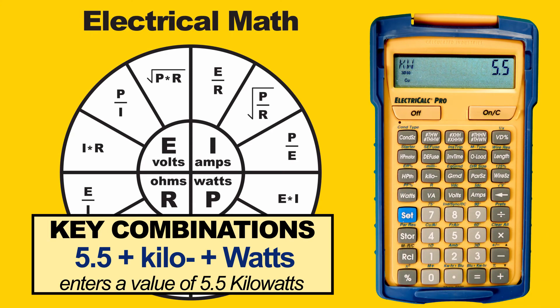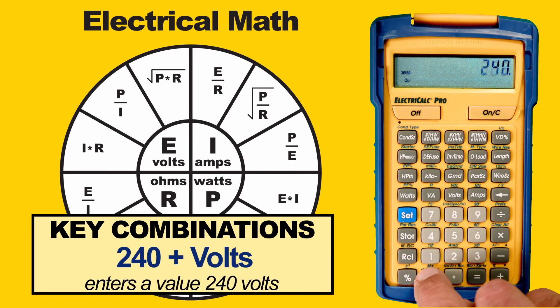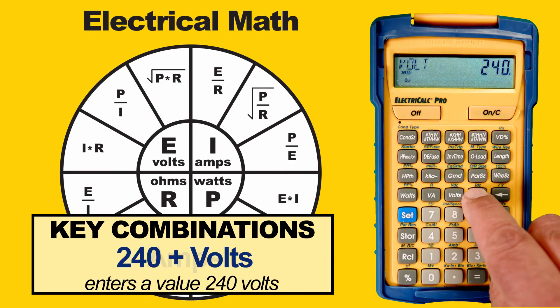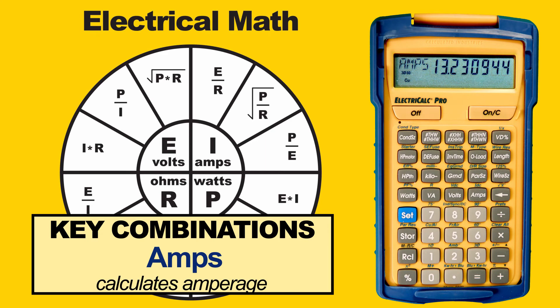Then enter the Volts, which in our example is 240. Press Amps and we see our amperage is roughly 13.23.